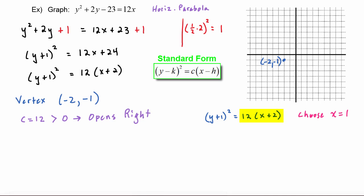Now if we do that, then we see that the equation becomes (y + 1)² equals, if we put that one in here for the x, we see that the parentheses becomes one plus two which is three, 12 times three is 36. So the reason I chose that x = 1 is so that I would get a perfect square here of 36.